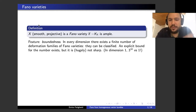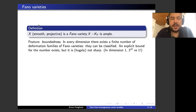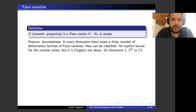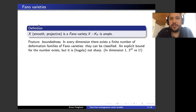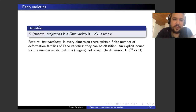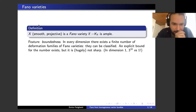Everything is going to be over the complex numbers, and that's very important. Everything is going to be smooth and projective until I say otherwise. I feel this is a pretty important specification when working with Fano varieties, because in this talk I'm not going to consider Fano varieties with singularities, however mild they could be. So for me during this talk, a Fano variety will be a smooth and projective variety such that its anti-canonical bundle is ample.